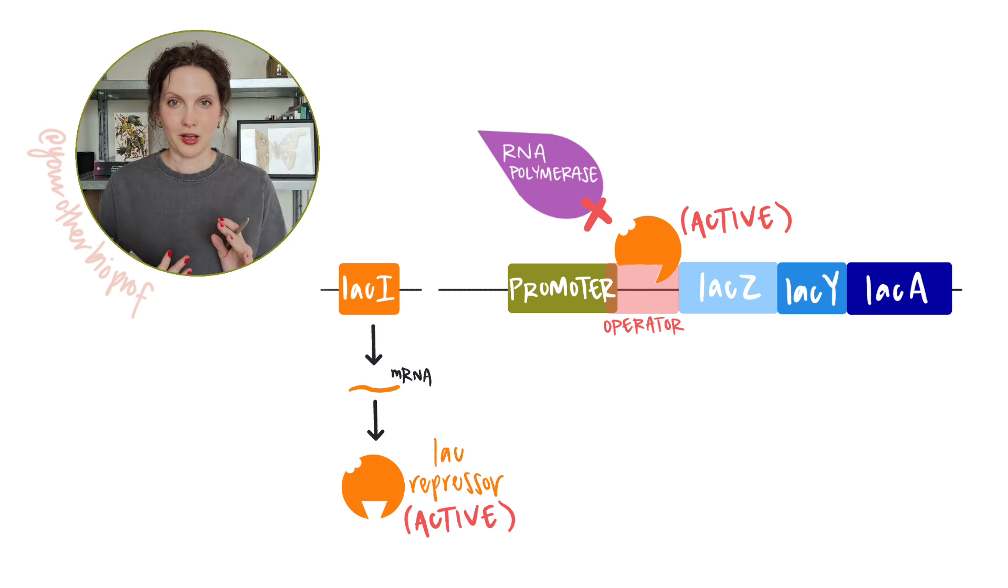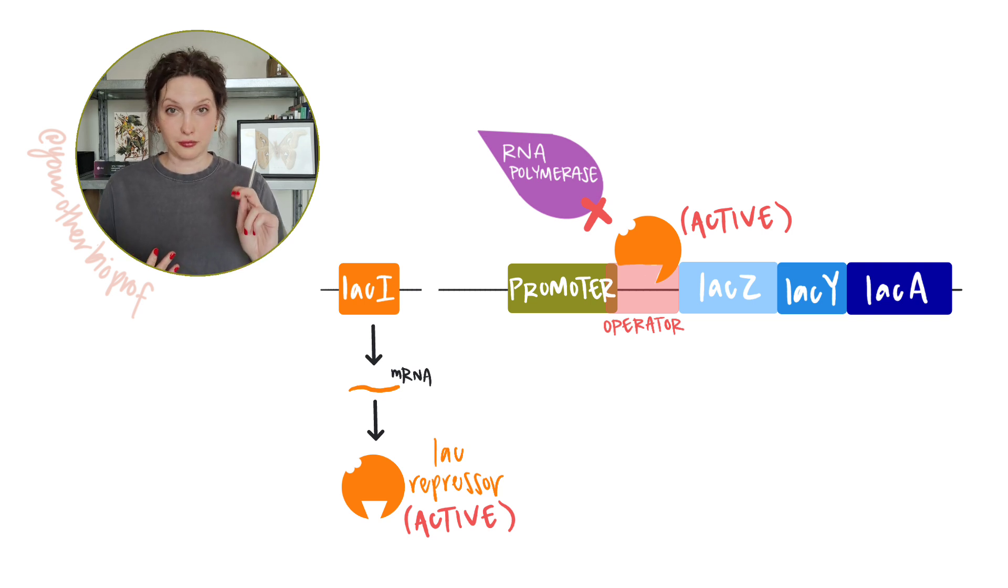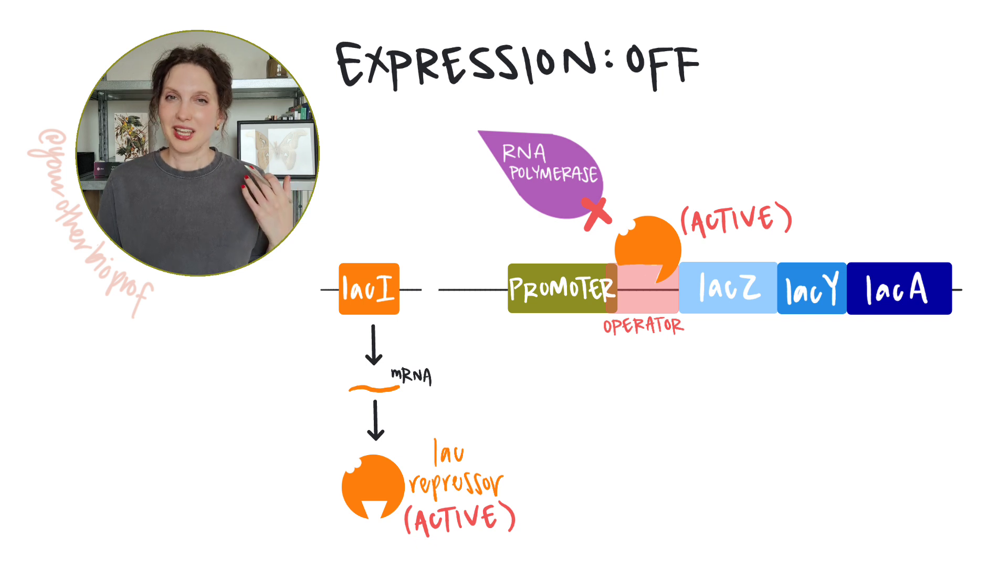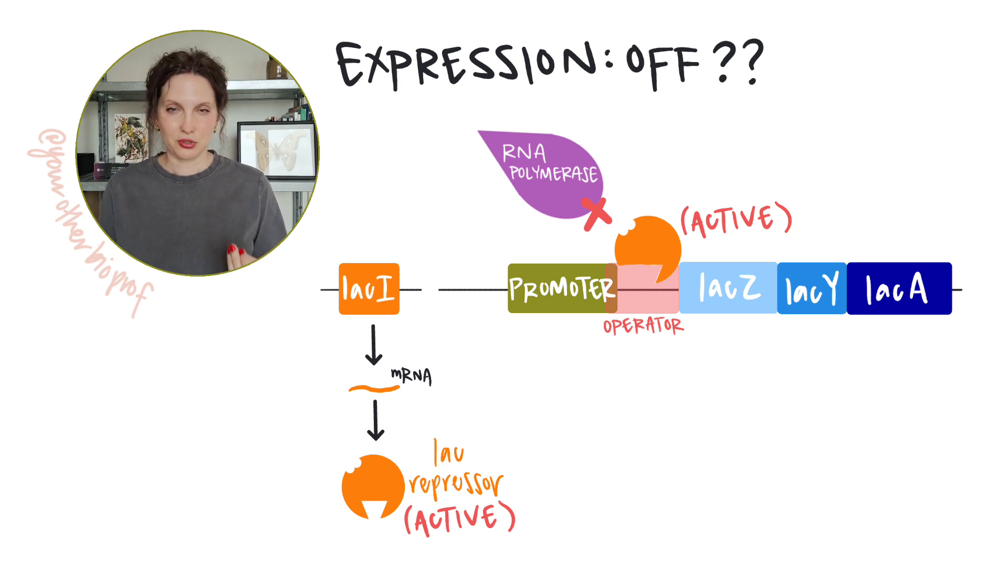Now many classes will talk about the lac operon being off when the levels of lactose are too low to inactivate the repressor. In fact, that's what I just did. But in reality, the lac operon is never a hundred percent off. There's always at least a little bit of transcription happening. But why? Well, the active lac repressor isn't 100% effective at binding to the operator. It can fall off.